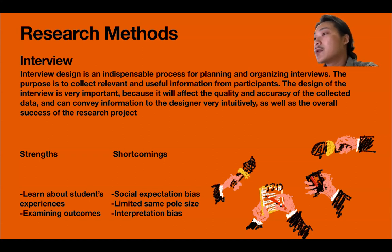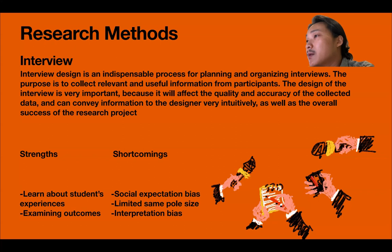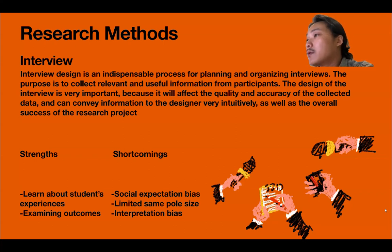About the shortcomings of interviews, the first is social expectation bias. Participants may tend to show the positive side or provide the answers they guess the interviewer wants to hear. This may lead to the deviation of social expectations, not telling the truth, and affecting the accuracy of the collected data. The second is limited sample size. Interviews may be time-consuming and labor-intensive, which may limit the sample size of the study, meaning that the data collected may not be representative. The third is interpretation bias. Interpretation of interview data is mostly subjective because researchers may make different interpretations of answers based on their own bias and assumptions.